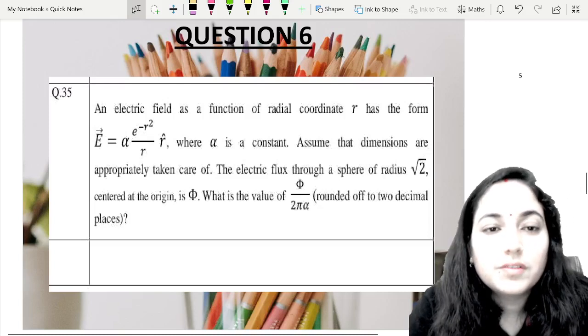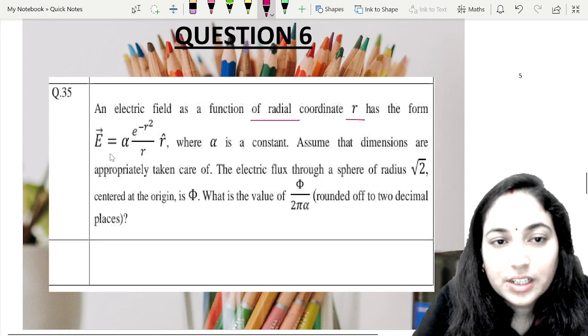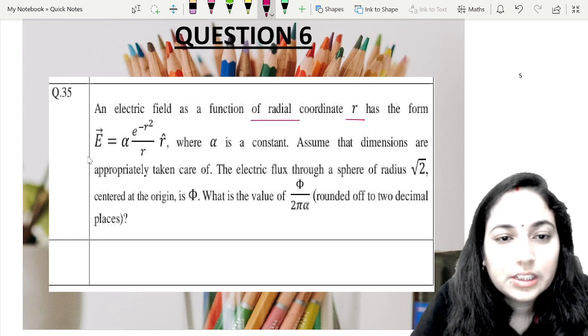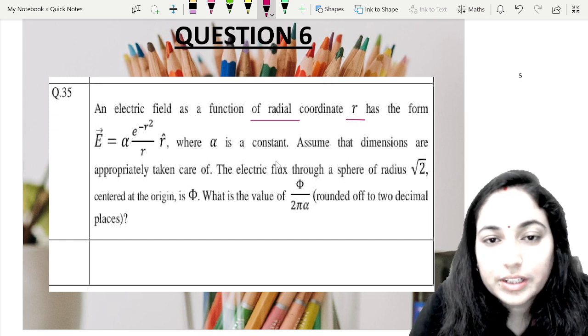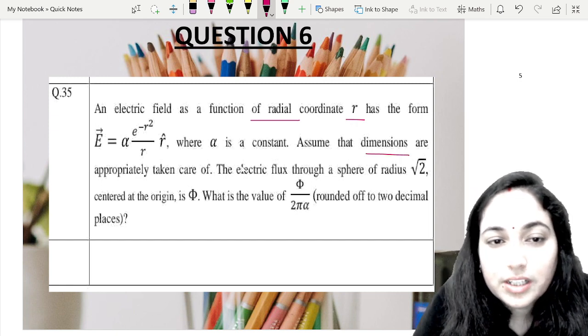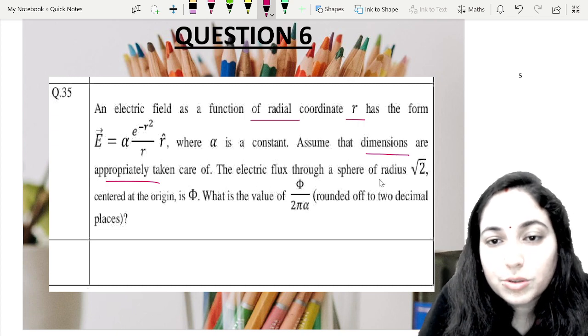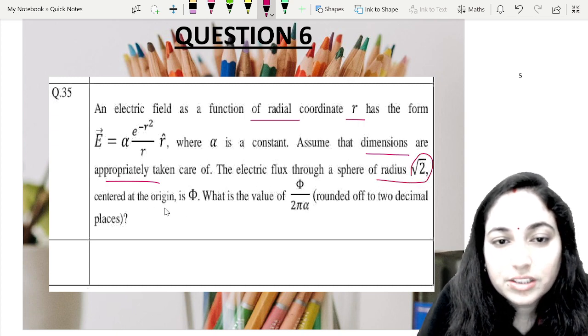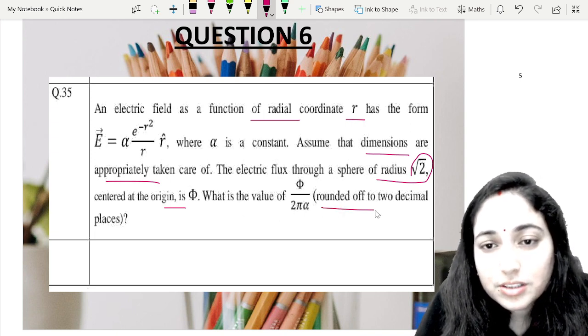So the next question: we have an electric field as a function of radial coordinate r with the form E equals alpha e to the power minus r squared over r, r cap, where alpha is a constant. Assume that dimensions are appropriately taken care of. The electric flux through a sphere of radius √2 centered at the origin is Φ. What is the value of Φ/(2α) rounded off to two decimal places?